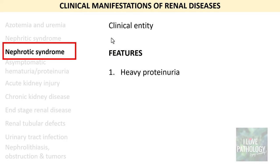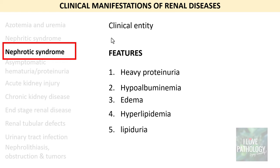In contrast, nephrotic syndrome is also a clinical entity characterized by heavy proteinuria, thereby leading to hypoalbuminemia, which may lead to edema. The fourth and fifth features are hyperlipidemia and consequent lipiduria. These are the five important features of nephrotic syndrome. I will be discussing in detail the differences between nephritic and nephrotic syndrome in another tutorial.